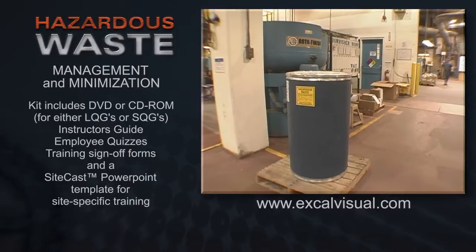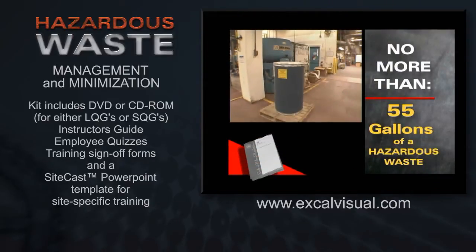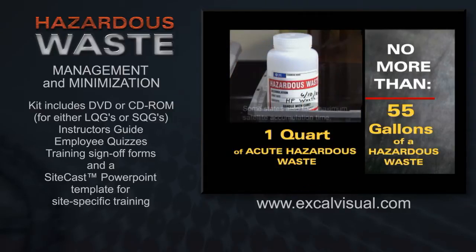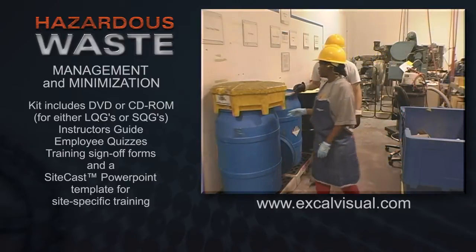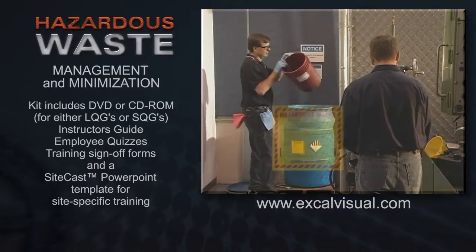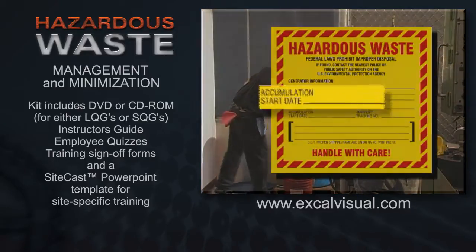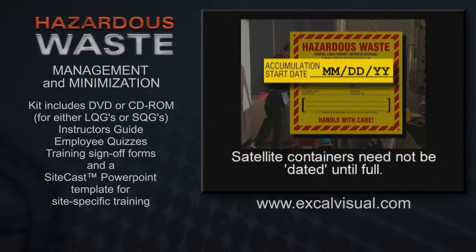In any case, no more than 55 gallons of a hazardous waste or one quart of acute hazardous waste may be accumulated in a satellite container at any one time. Unlike on-site accumulation containers, when the amount accumulated in a satellite container reaches these levels, that date must be entered on the label.